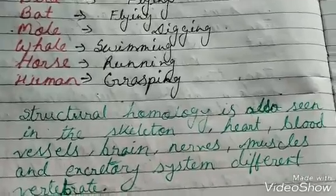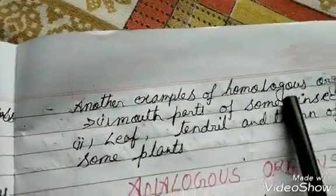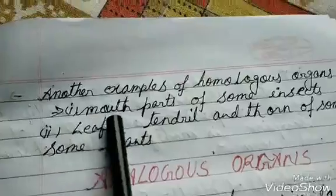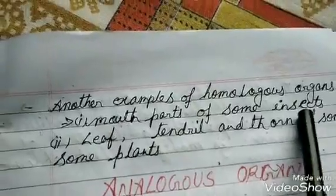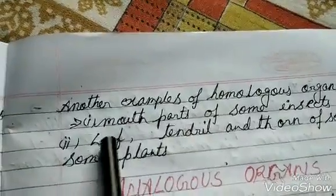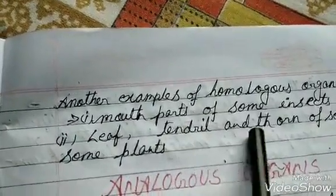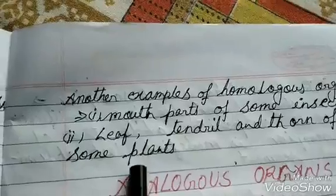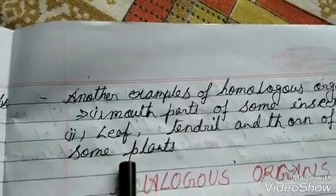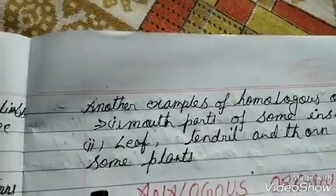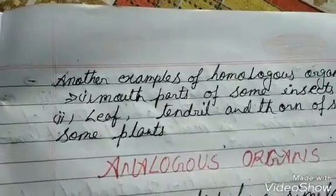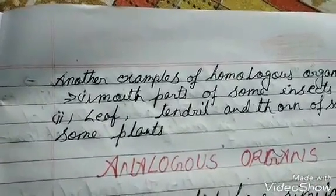Structural homology is also seen in the skeleton, heart, blood vessels, brain, nerves, muscles, and excretory systems of different vertebrates. Some other examples of homologous organs are the mouth parts of some insects, leaf tendrils, and the thorns of plants. Thank you for watching — I'm going to discuss analogous organs in my next video.